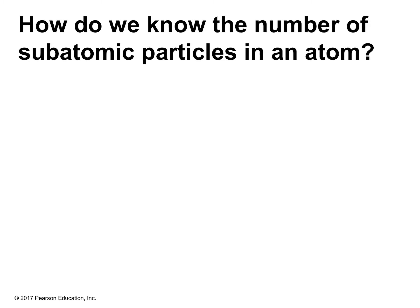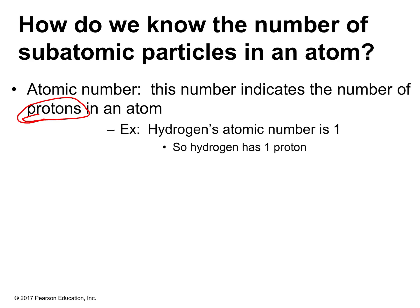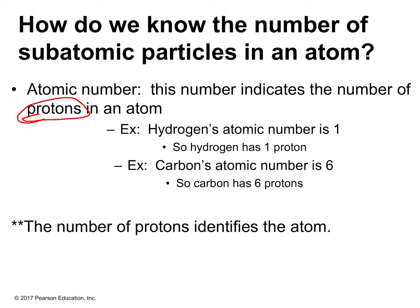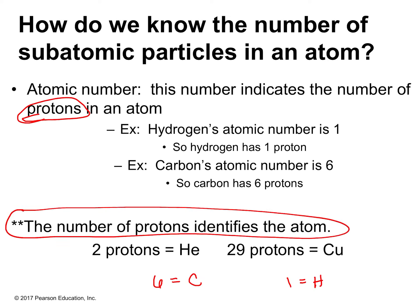The atomic number tells us the number of protons in the atom. Hydrogen has atomic number 1, so it has one proton. Carbon has atomic number 6, so it has six protons. The number of protons identifies the atom: every atom with two protons is always helium, and if an atom has 29 protons, it is always copper. The electrons and neutrons can be different, but the protons identify the atom. If you have six protons, that's always carbon — it can't be anything else.